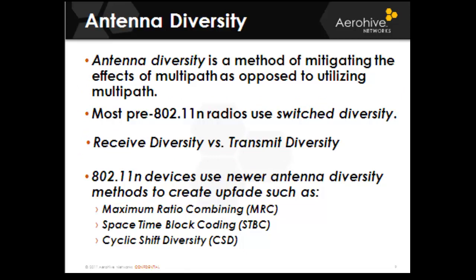Antenna diversity is simply a method of mitigating the effects of multipath, as opposed to utilizing multipath. Legacy 802.11 radios — such as pre-n or legacy A/B/G radios — use single input, single output, and would use two antennas connected to one radio. However, unlike a MIMO chain, the two antennas could not be used at the same time. The antenna picking up the stronger signal was used, while the weaker signal received by the second antenna was ignored. When transmitting a response, the device would transmit back out the antenna that received the stronger signal.